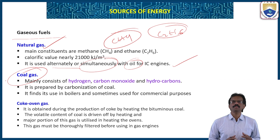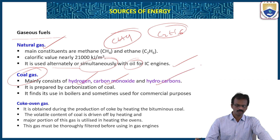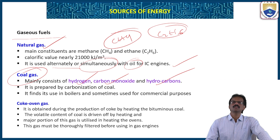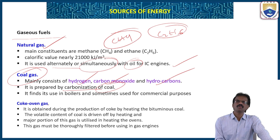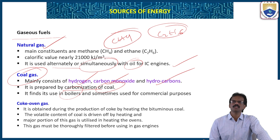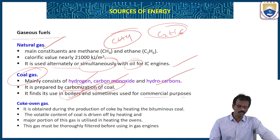The next gaseous fuel is coal gas. The main constituents are hydrogen, carbon monoxide, and hydrocarbons. It is prepared by carbonization of coal — that is, burning coal with an insufficient supply of air. The main advantage of coal gas is that it is used in boilers for energy for boiling, and sometimes also for commercial purposes.